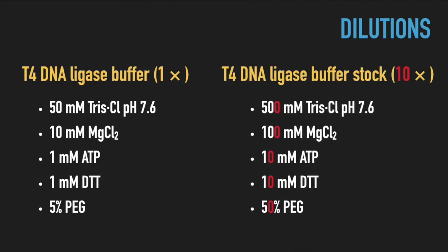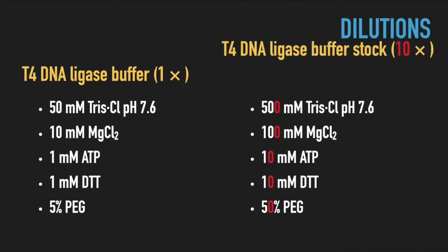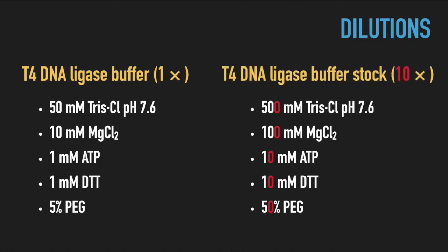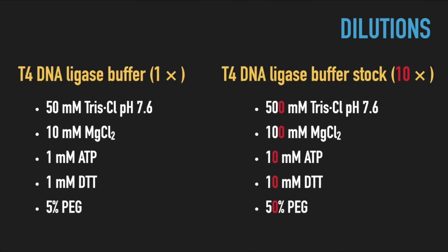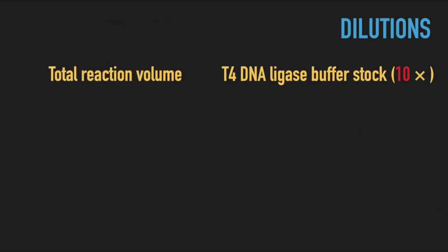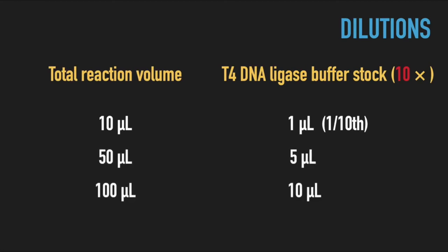The 10x stock contains 500 millimolar Tris, 100 millimolar magnesium chloride, 10 millimolar ATP and so on. It is often referred to as 10 times concentrated stock, or just 10x stock. To achieve the final concentration, which is by default assumed to correspond to 1x, you'd need to add 1 microliter for 10 microliter total reaction volume, 5 microliters for 50, 10 microliters for 100 reaction volume and so on.